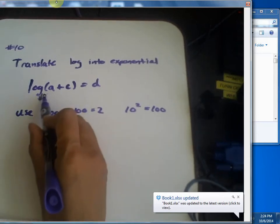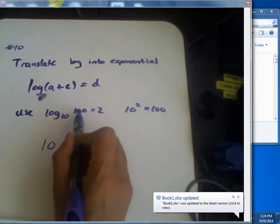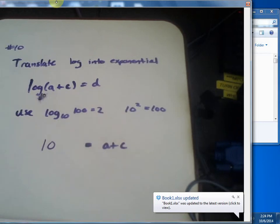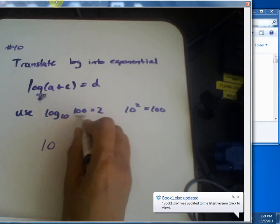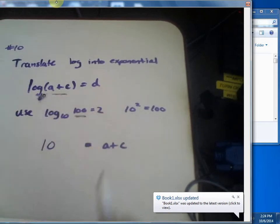This little 10 right here that I have written here is the bottom. The thing that's on the inside where the 100 is goes on the other side of the equal sign. This 100 right here is the same thing as the a plus c. It goes on the other side of the equal sign. The d, where does the d go on my exponential equation?